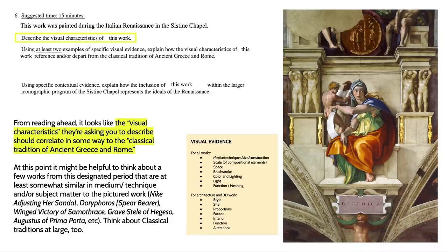At this point, it might be helpful to think about a couple of works from ancient Greece and ancient Rome that are at least somewhat similar to this piece in terms of aesthetics or media being used. We don't have that many paintings from Greece and Rome, given that a lot of the materials they painted on rotted away. So we can rely on a lot of sculptural work, like Nike Adjusting Her Sandal, the Spear Bearer, the Grave Stele of Hegeso, Augusta of Prima Porta, and the Winged Victory. It's helpful to think about classical traditions at large too.